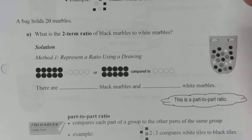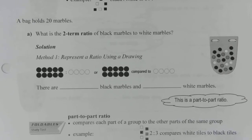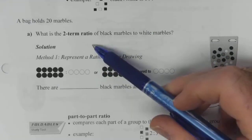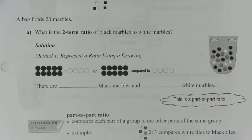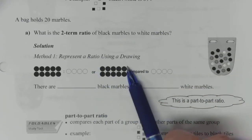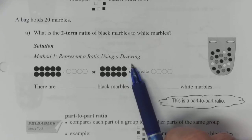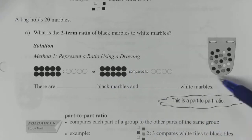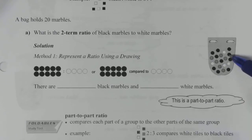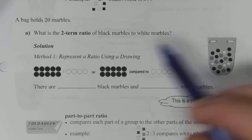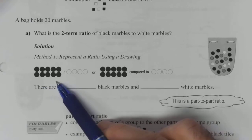So let's have a look here. A bag holds 20 marbles. What is the two-term ratio of black marbles to white marbles? So if we look at it, method one, we can represent a ratio using a drawing. And if we go through here, we can count one, two, three, four, five, six, seven, eight, nine, ten black marbles. So we've got ten black marbles drawn here.